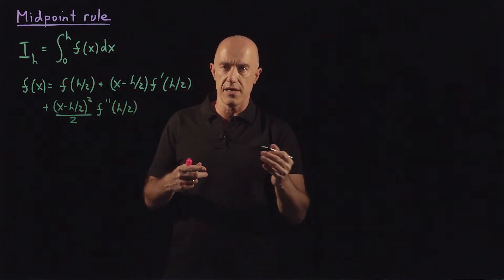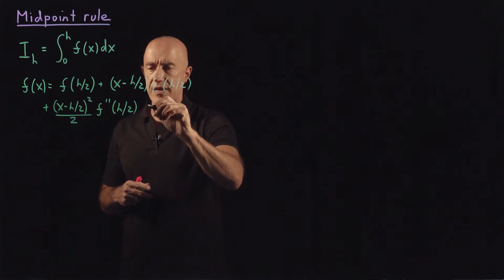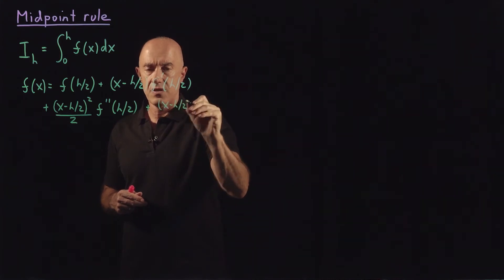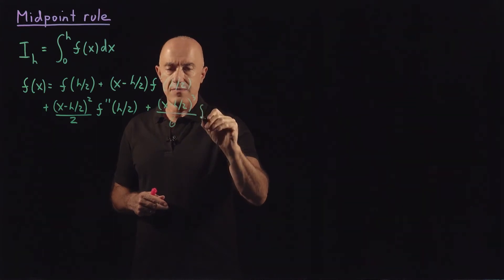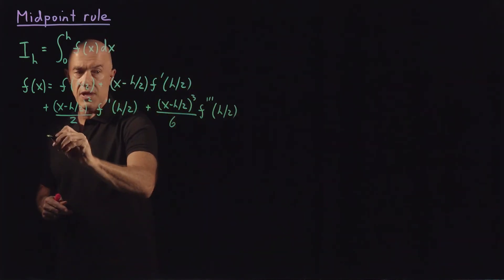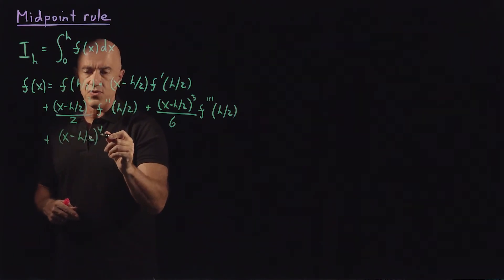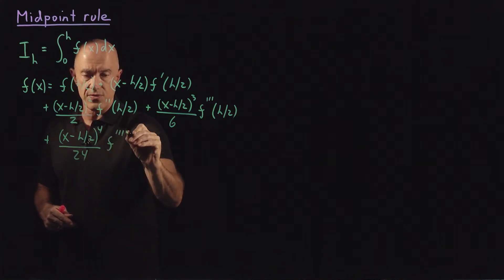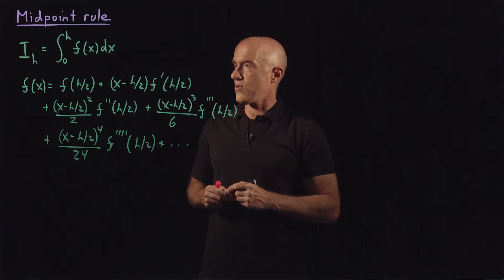I'm going to include more terms than we need here because we'll need them later. So we have plus x minus h over 2 cubed over 3 factorial, which is 6, times the third derivative of f at h over 2, plus x minus h over 2 to the fourth over 4 factorial, which is 24, times the fourth derivative of f at h over 2.